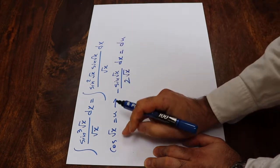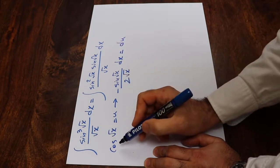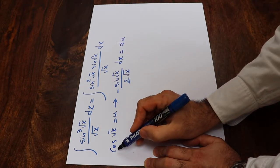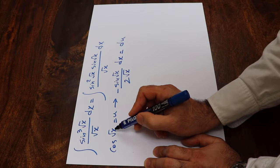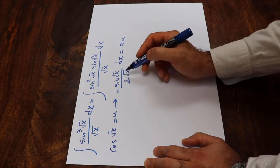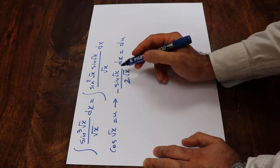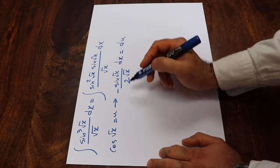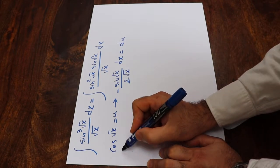If it's not clear how to calculate the derivative of cosine of square root of x, write for me in the comment section and I will explain for you how to do that.